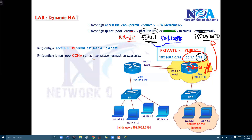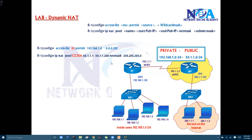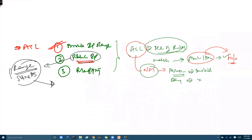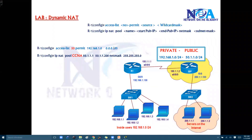In this example, the pool name is 'ccna.' We define the starting public IP, then the ending public IP, then the subnet mask depending on the network range being used. The third step is to do the mapping — we need to map the private address range (the ACL number) to the public IP pool, so that any network coming within the ACL's private IP range gets translated to a public IP defined inside the pool.